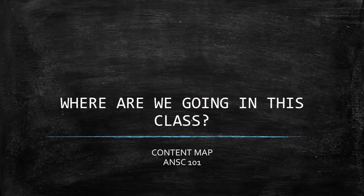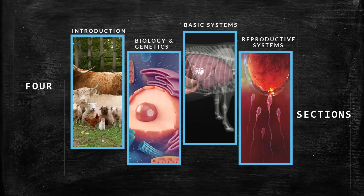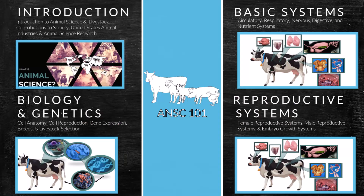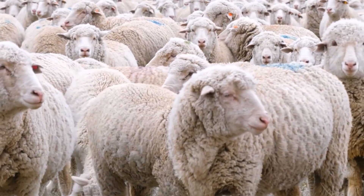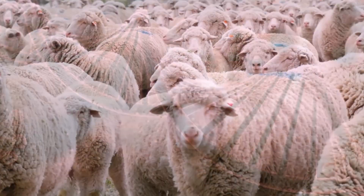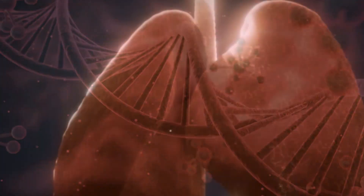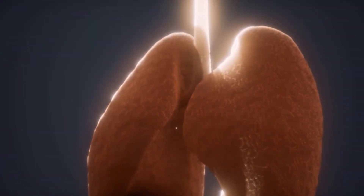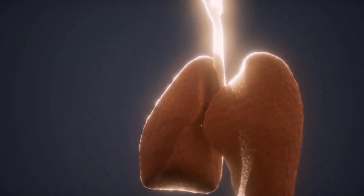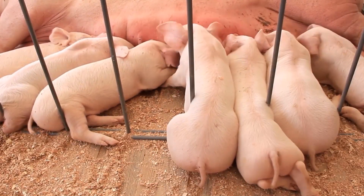Now, where are we going in this class? I want to give you a broad overview so that you understand where we're headed as we break down each module week by week. There are four sections in this class: the introduction, the biology and genetics, the basic systems, and the reproductive systems. Each week, we'll break one of those sections down into a weekly module. The introduction module covers introduction to animal science, animal industries, and research. Biology and genetics takes us through cell anatomy, reproduction, and livestock selection. Then we get into systems like the digestive system and the female and male reproductive systems — each correlating with one week in our semester. You can take a look at the class schedule to go over that in more detail.